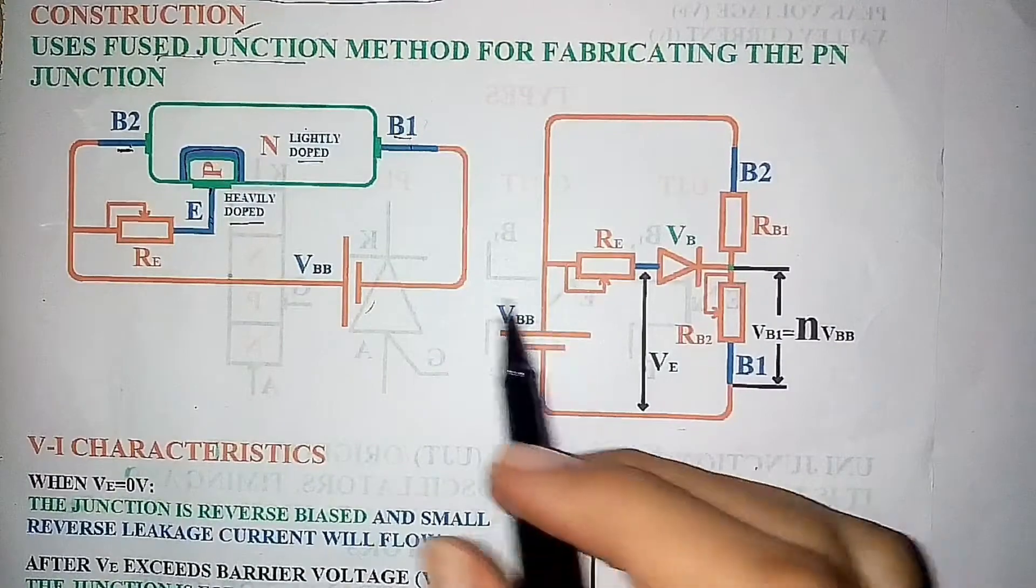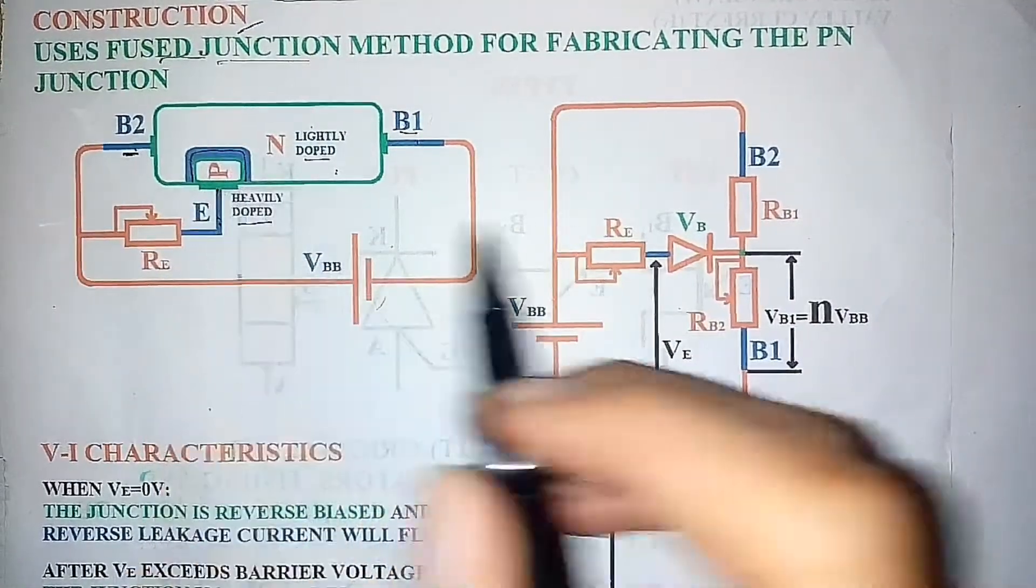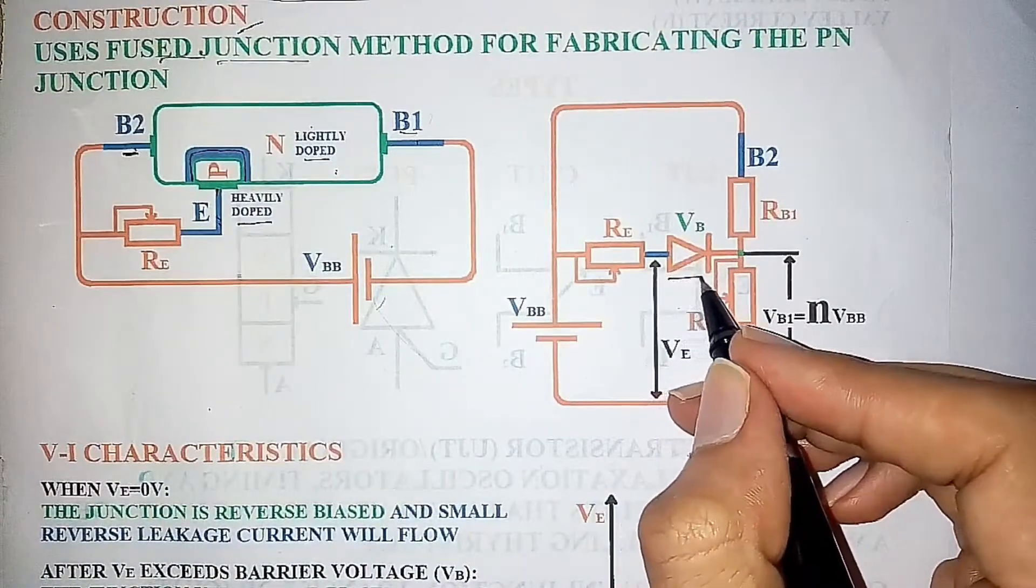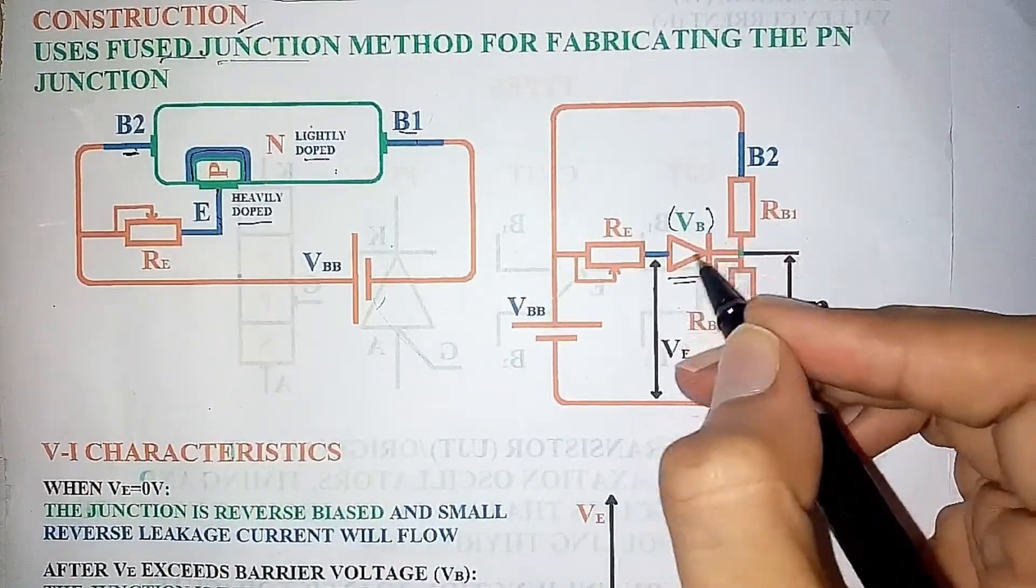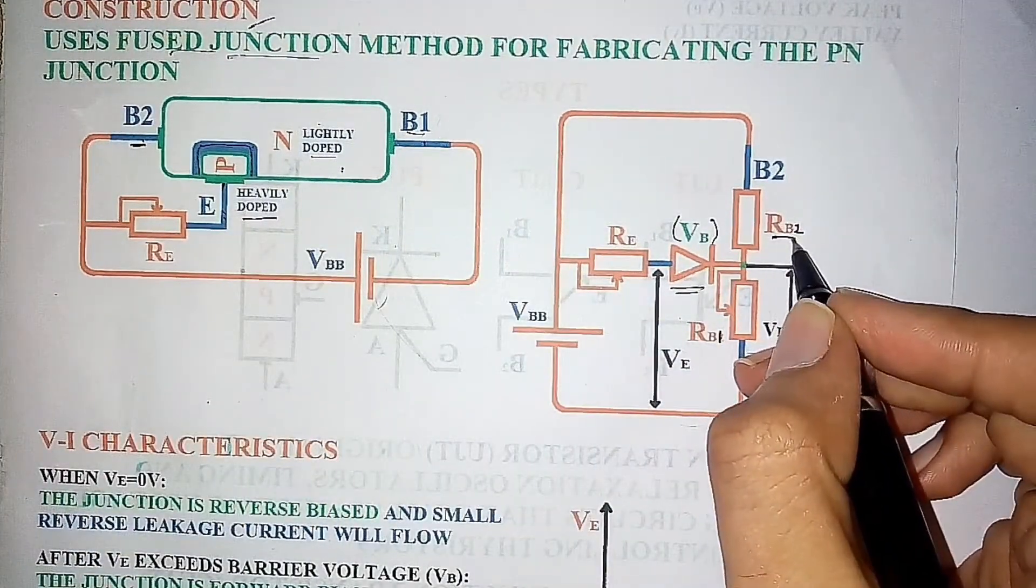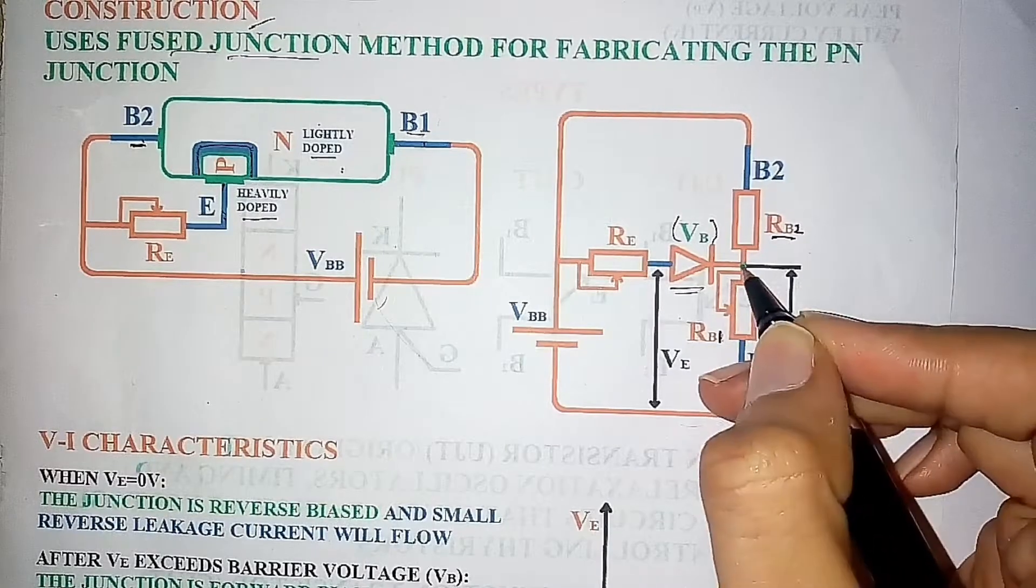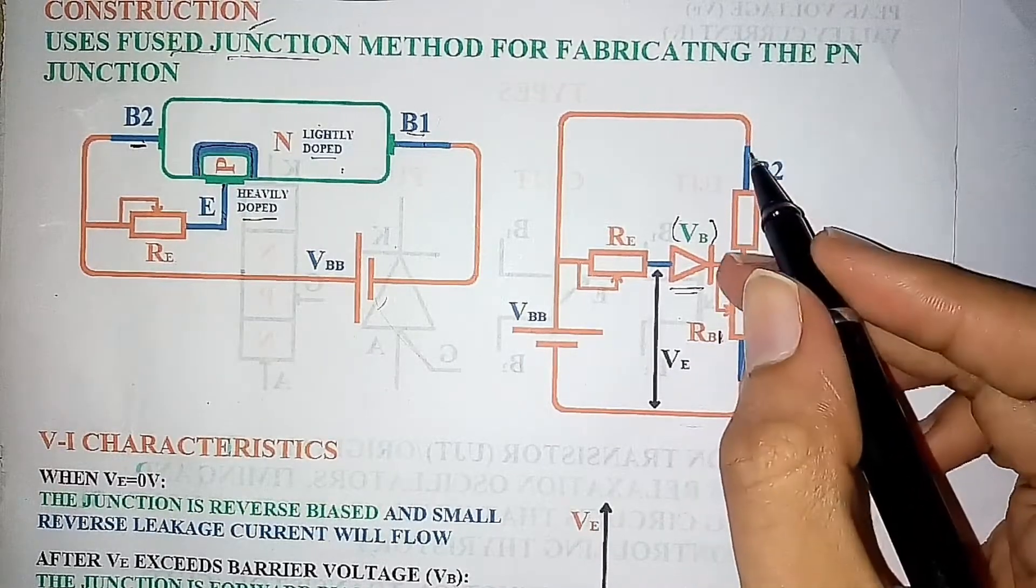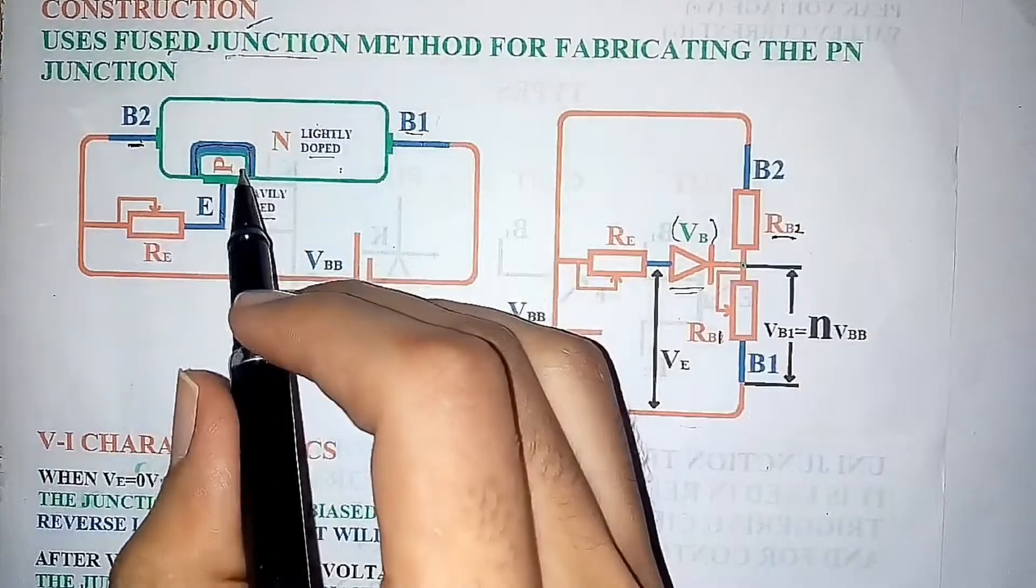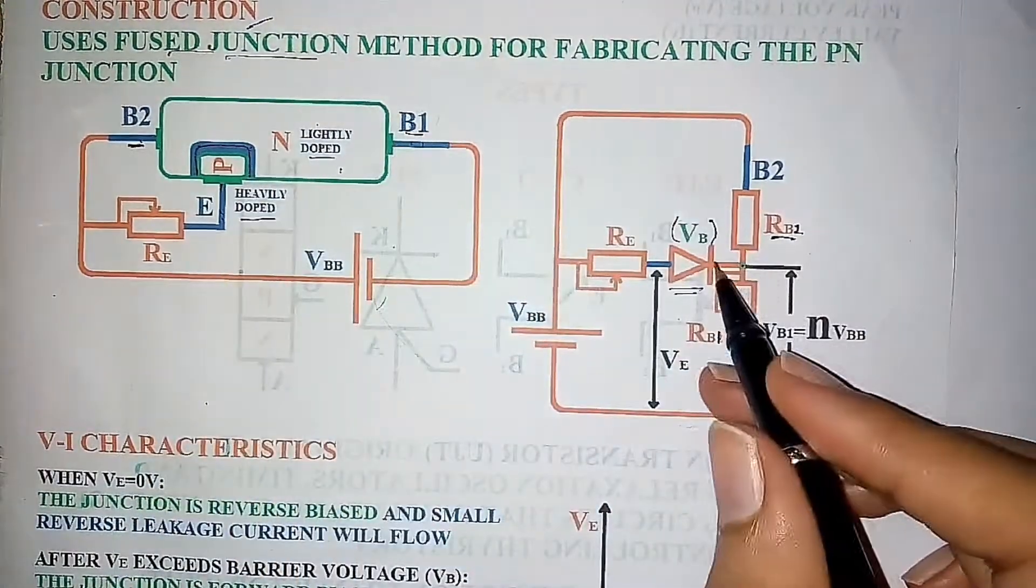This is the equivalent diagram of this circuit. So, this PN junction is represented by a diode and here VB is the barrier voltage of the PN junction or B2. VB here represents the resistance between the junction and B2 terminal. The resistance between the junction and B1 terminal is represented by RB1.